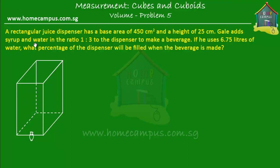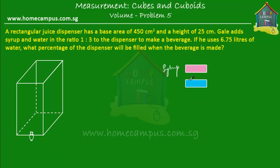If he's using 1 part of syrup to 3 parts of water, then how much beverage has he made in total? If he uses 1 part of syrup, then he is using 3 of these units of water. I'm going to color it blue because this is water. This is syrup. Now we don't know how much quantity of syrup — we only know 1 part of syrup to 3 parts of water. So let me make those 3 parts: 1 part of water, 2 parts of water, and 3 parts of water.